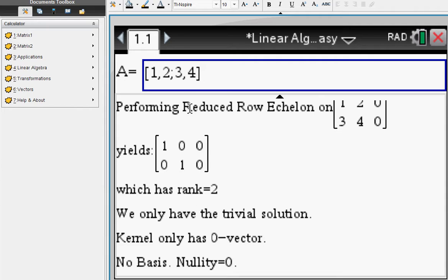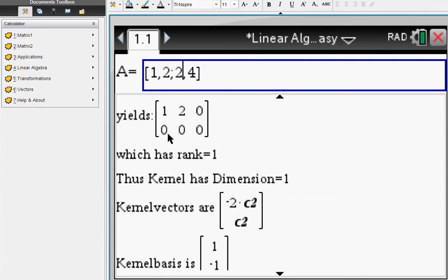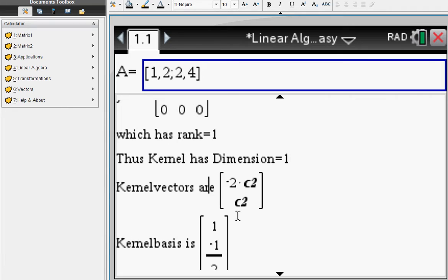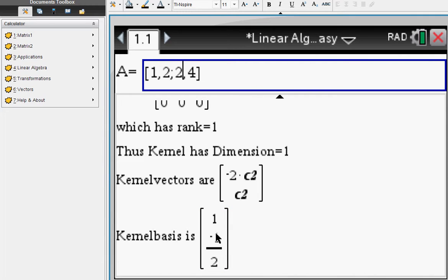But if the second row is a multiple of the first row, then after doing your row echelon computation you end up with a zero row, which implies a rank of one. Your kernel vectors are then of this format, so a kernel basis is one, negative one-half.